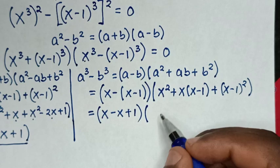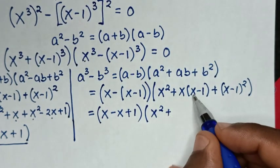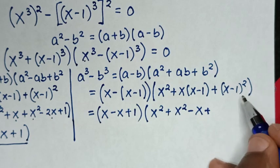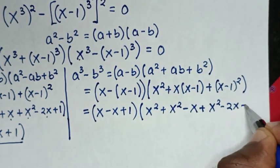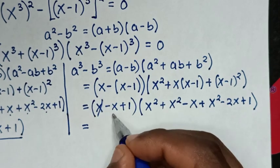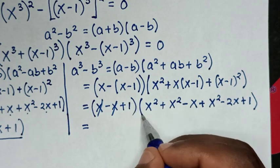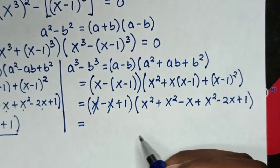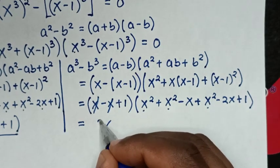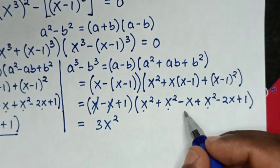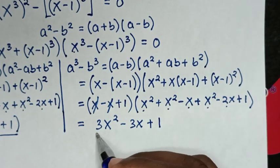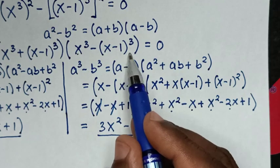Continuing: x minus x cancels to give 1, so the outer factor is 1. Then x² plus x² plus x² is 3x², and negative x minus 2x is negative 3x, plus 1. So the second part simplifies to (3x² minus 3x plus 1). We substitute this simplified form for the second part.